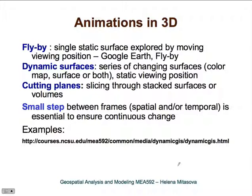We can do animations in 2D and 3D. In 3D, one of the most common types is flyby, where we use a single static surface and fly over it. It is used extensively by Google Earth and almost every 3D visualization tool. It is most useful for large data sets you want to explore in detail. Another type uses dynamic surfaces with a static viewing position, and another uses cutting planes to slice through stacked surfaces.